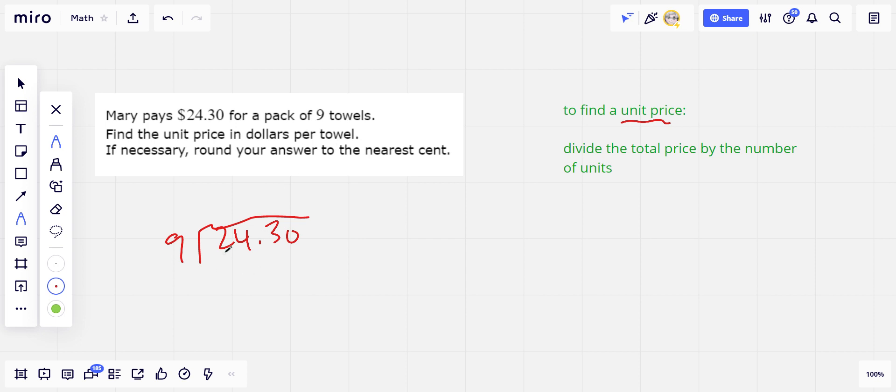So let's see. How many 9s in 2? Well, that doesn't work. 24, three times 9 is 27, so I've got to go 2. So that's 18, and then we're going to subtract. So we'll borrow there. So 14 minus 8, that's 6, and 30.